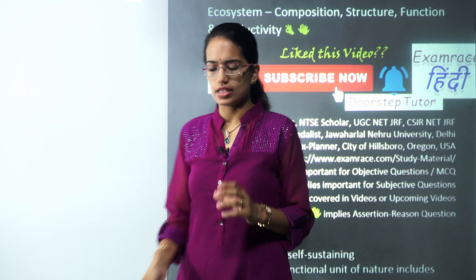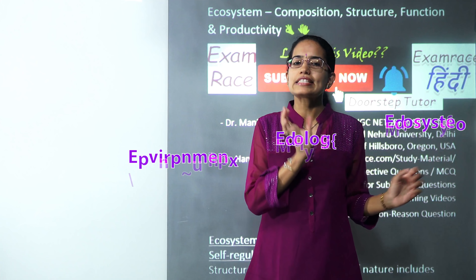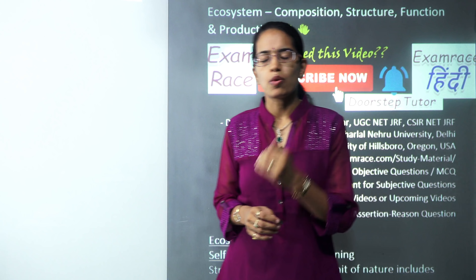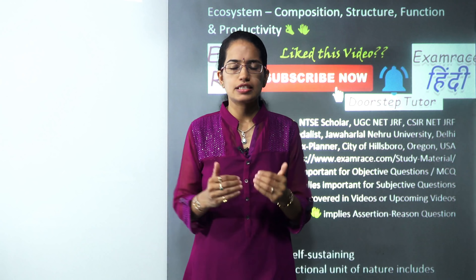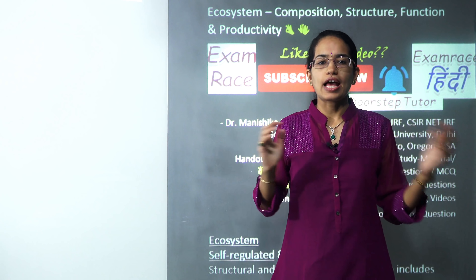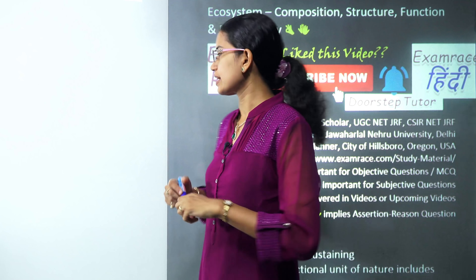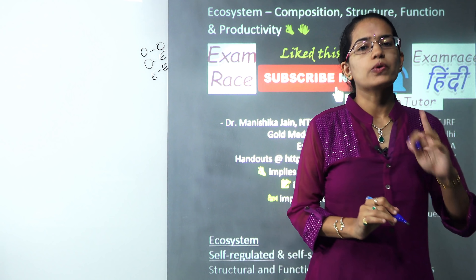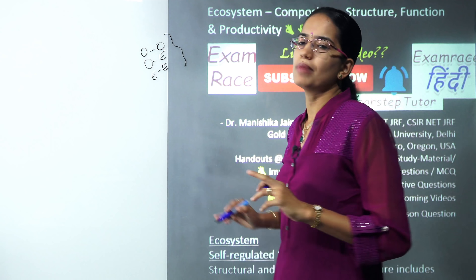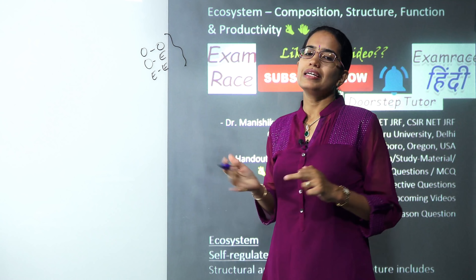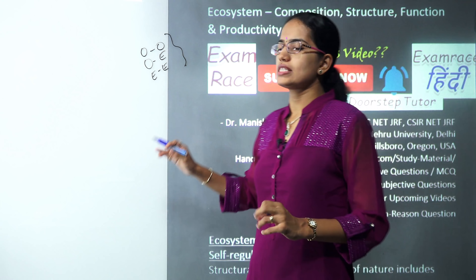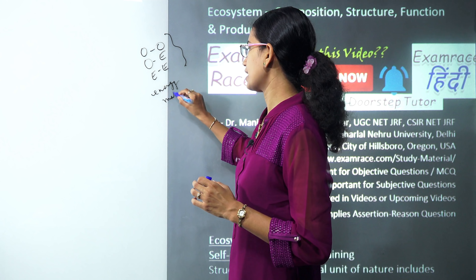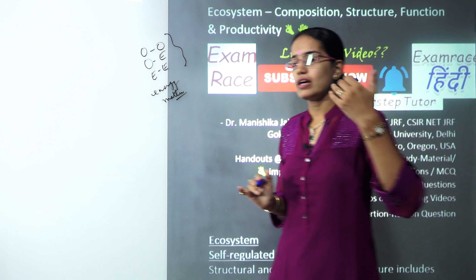Before we start with what is ecosystem, let's have a difference between the three terms: ecosystem, ecology, and environment. Ecology is the study of the surrounding or the study of the various ecosystems. Ecosystem talks about interrelationships between organism and environment, and organism and organism. Those are the three kinds of interactions under ecosystem, governed by biotic and abiotic components. Ecosystem is both a structural and a functional unit — it is an open system, meaning there is exchange of energy and matter.